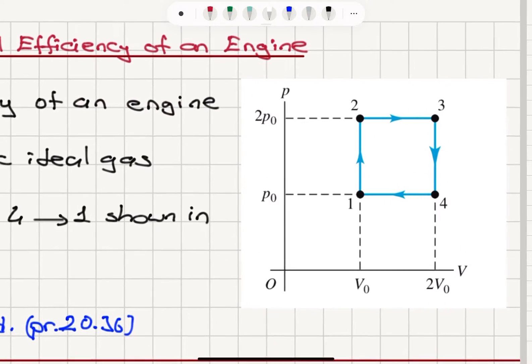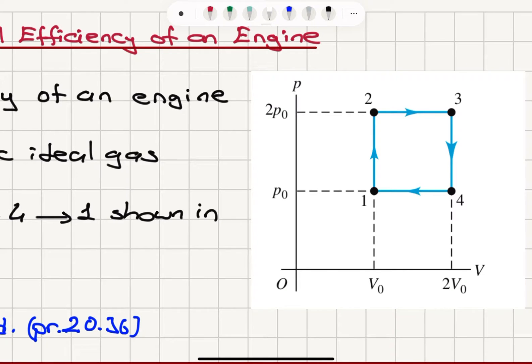To start solving this problem, I want to concentrate on the figure. I see isobaric and isovolumetric processes, and I want to determine where is the lowest temperature and where is the highest temperature. If I start drawing isotherms here, I would see that the lowest isotherm would go through point 1. A higher isotherm would go through point 4, a higher isotherm would go through point 2,